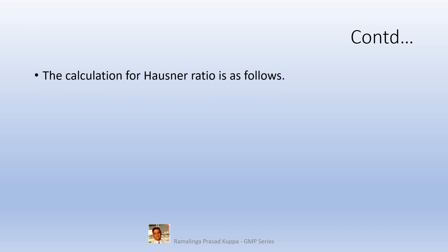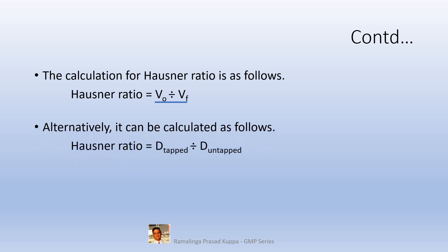The calculation for Hausner ratio is as follows: Hausner ratio is equal to V0 divided by VF. Alternatively, it can be calculated as follows: Hausner ratio is equal to D tapped divided by D untapped. Hausner ratio is calculated using these formulas when the bulk volume, tapped volume, or bulk density and tapped density values are known.